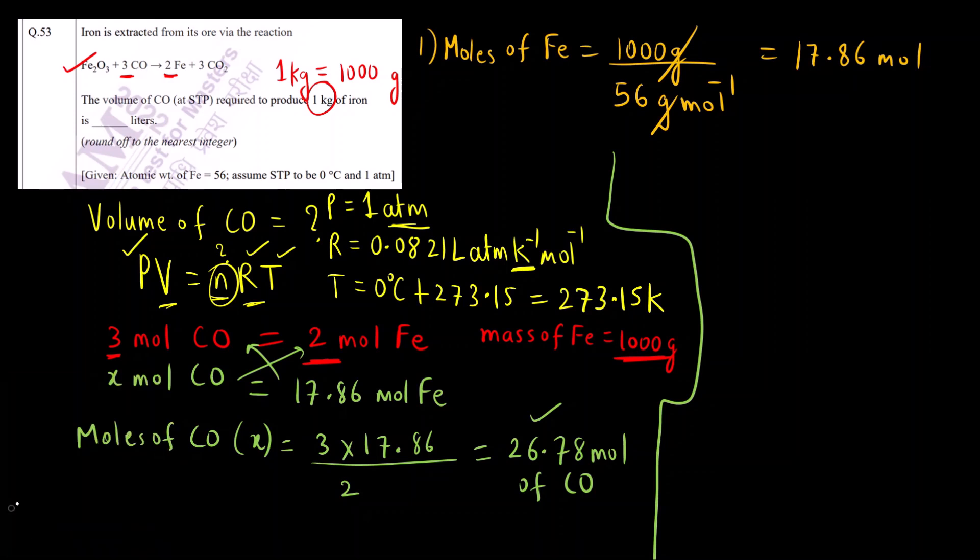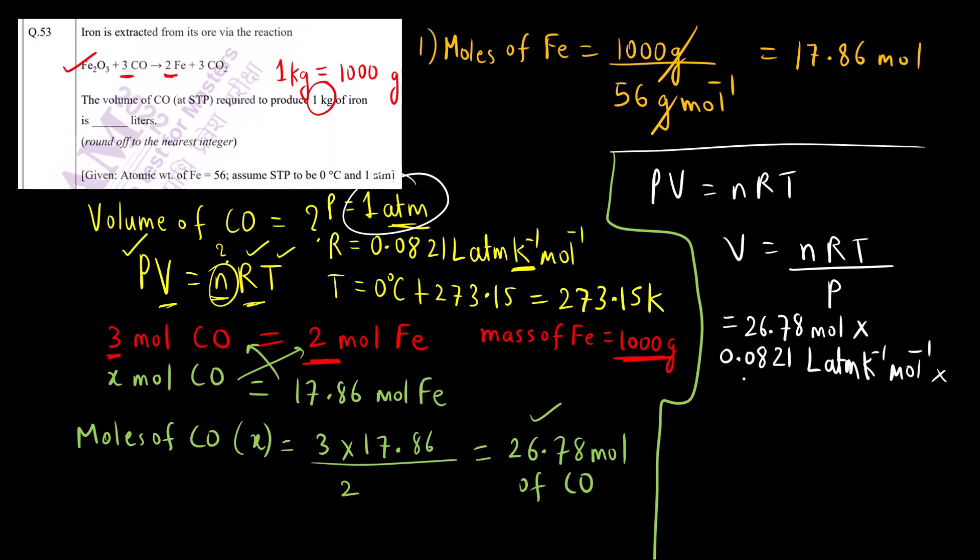Now we can use ideal gas equation and find out the volume of CO that will be required. PV is equal to nRT, so V is equal to nRT by P. Substituting: moles of CO is 26.78, R is 0.0821, T is 273.15 K, P is 1 atm. Let us check the unit: moles cancel, Kelvin cancel, atmosphere cancels. Final answer is in liter. If you solve, you will get the answer as 600.69.